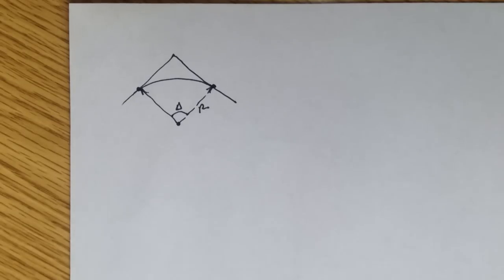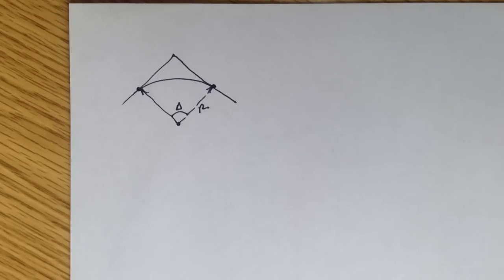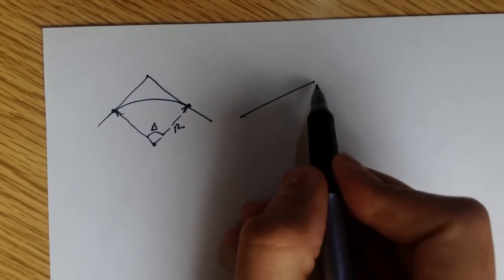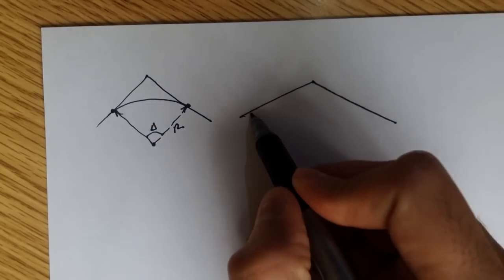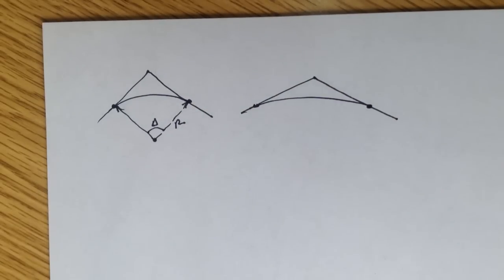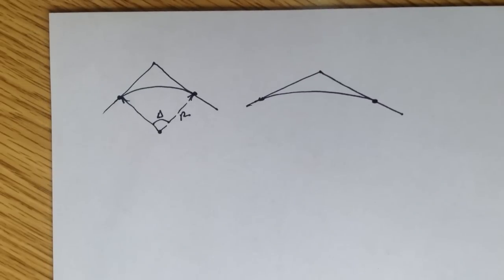The reason vertical curves are based off parabolic functions is because parabolic functions provide a smoother transition between vertical grades. Parabolic curves are suitable because they provide a constant rate of change of slope for the curve. Normally, you'll have an entering tangent and an exiting tangent, and then you have the parabolic vertical curve. In this video, I'm going to go over the different types of vertical curves, and in the following video, I'll go over the math and equations needed to solve problems based off vertical curves.